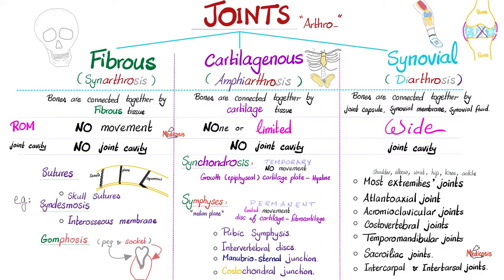Next is syndesmosis. Osis means condition. Syn means synchrony or together. Desmo means glue. Both bones are glued together via an interosseous membrane. An example is the interosseous membrane between the lower ends of your tibia and fibula.